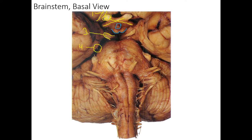Next, we have the root of the trigeminal nerve — cranial nerve five — right there. And moving medially, we have the abducens nerve, cranial nerve six, labeled right there.